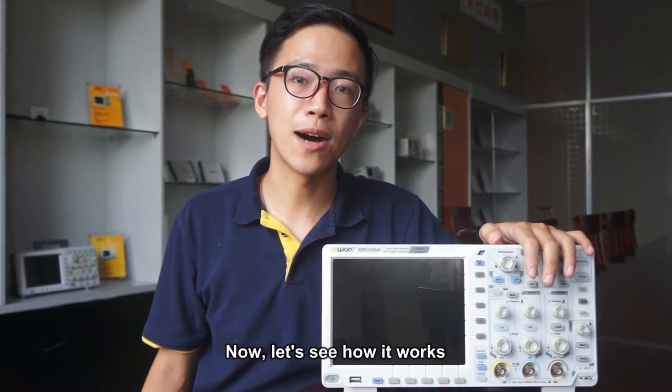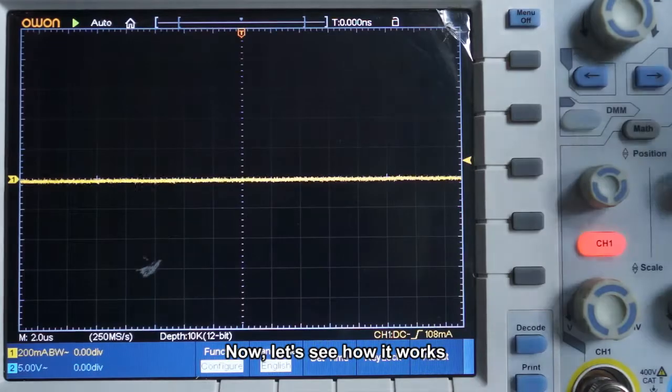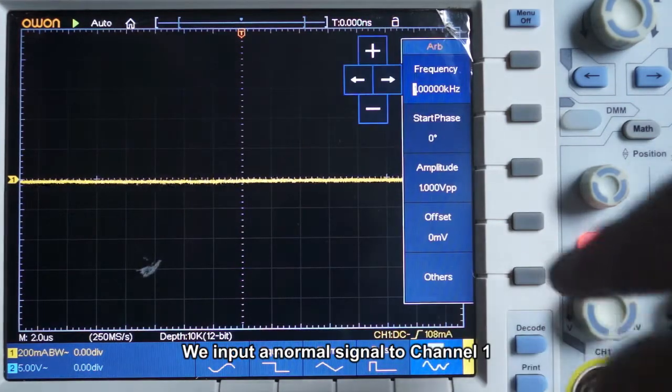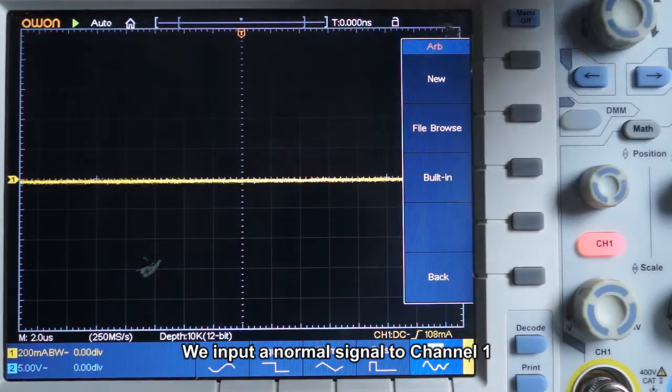Now, let's see how it works. We input the normal signal to channel 1.